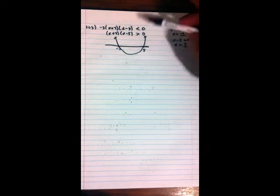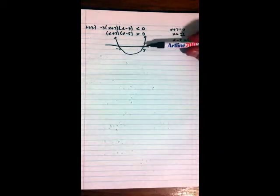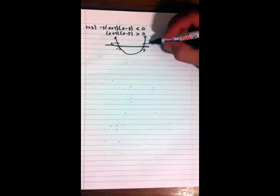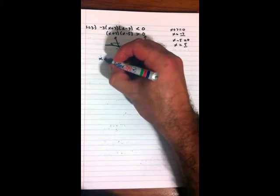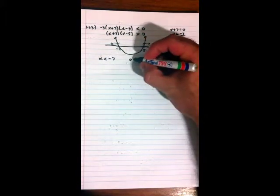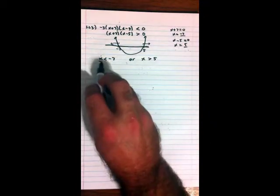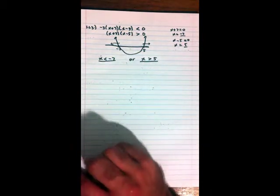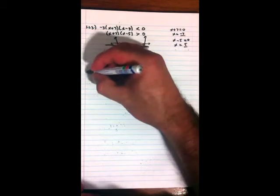Now, the question asks, where is this equation, this function, this expression, where is it greater than 0? Where is it above the x-axis? And we see it's all the values from negative 7 to the left, and all the values from 5 to the right. So therefore, x has to be less than -7, or x has to be greater than 5. And there we go. That's our answer. So it's very useful to always draw a little picture, a little parabola.